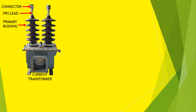This is the gas vent to exit excessive gas. This is the tank where windings and cores are kept deep inside the transformer. These are the secondary leads and bushings. The secondary winding connections are drawn outside through these bushings and leads.